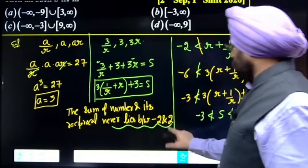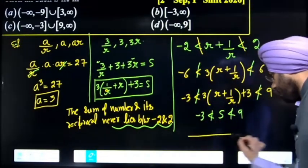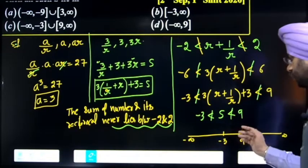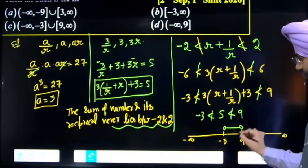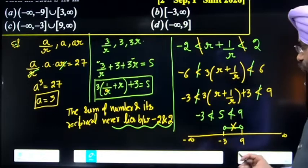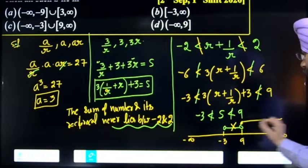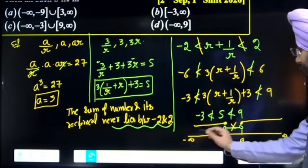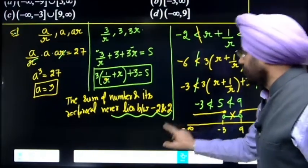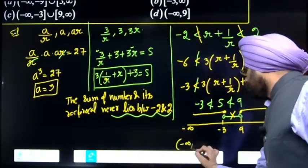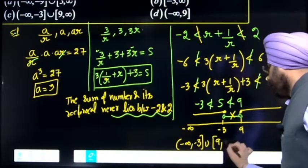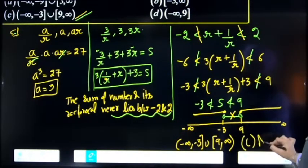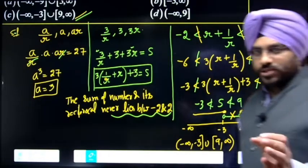According to the number line from minus infinity to infinity, with -3 and 9 marked, the value of S does not lie between -3 and 9. So S lies either less than -3 or greater than 9, and -3 and 9 are included. Looking at the options, our answer is: minus infinity to -3 union 9 to infinity. The final answer is option C: (-∞, -3] ∪ [9, ∞). Clear students, thank you.